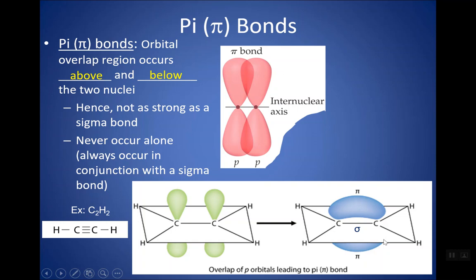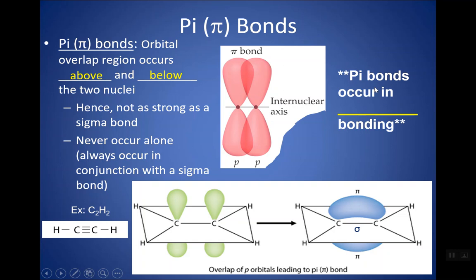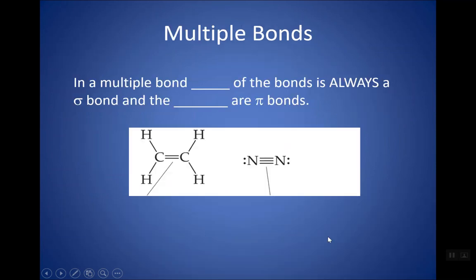What the AP exam wants to know is simply whether a bond is sigma or pi in a structure. Whenever you have a multiple bond — double or triple — you're going to start having pi bonds. Single bonds are always sigma. Pi bonds start to happen in multiple bonding, but in a multiple bond, one of the bonds is always a sigma — you put it directly between the atoms first — and then the extra ones are pi bonds.